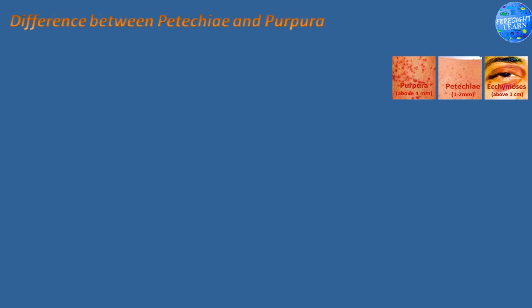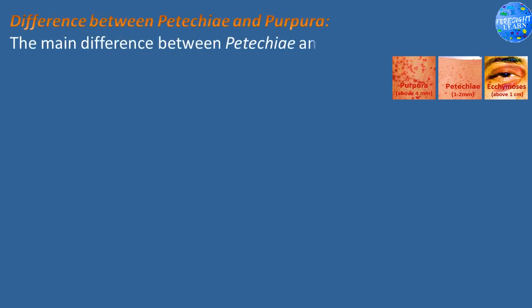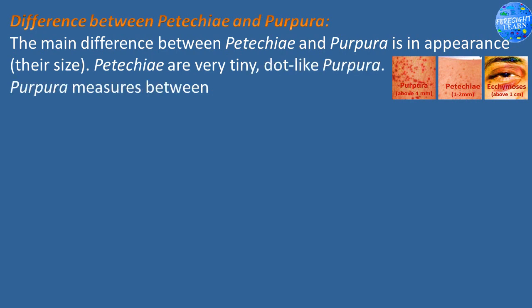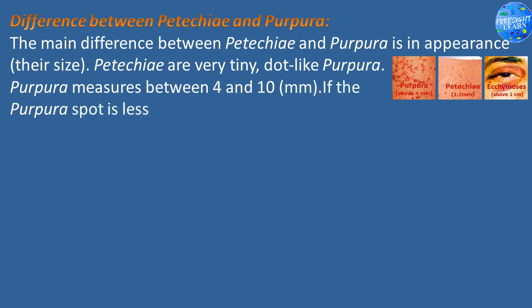Difference between petechiae and purpura. The main difference between petechiae and purpura is in their size. Petechiae are very tiny, dot-like purpura. Purpura measures between 4 and 10 mm. If the purpura spot is less than 4 mm wide, it's called petechiae.